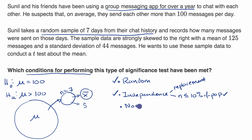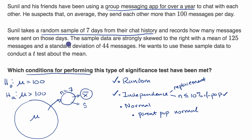The last condition is often known as the normal condition — this is to feel good that the sampling distribution of the sample means is approximately normal. There are a few ways to satisfy this. One is if the underlying parent population is normal. They don't tell us anything indicating a normal distribution for the amount of messages sent on a given day, so we don't know this one for sure. Another way is if our sample size is greater than or equal to 30, which comes from the central limit theorem — then our sampling distribution will be roughly normal. But our sample size is clearly not greater than or equal to 30, so we don't meet that constraint either.